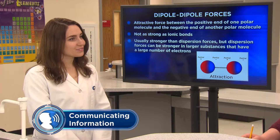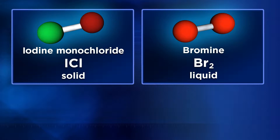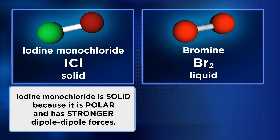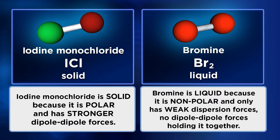I saw that iodine monochloride, which is used in medical labs, and molecular bromine, which is used to purify water, both have two atoms and are about the same molecular weight. Surprisingly, iodine monochloride is a solid while bromine is a liquid. It's because the iodine monochloride molecule is polar, so it sticks to other iodine monochloride molecules a lot better than the bromine molecules do. The bromine molecule is nonpolar - it's just two bromine atoms with the same electronegativity - so the only intermolecular forces acting in a sample of bromine are dispersion forces. That's why it's a liquid.